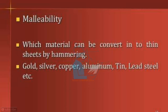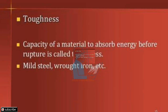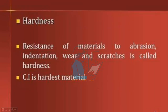Malleability is the process which converts a piece of aluminum into a thin sheet. For example, gold, silver, copper, aluminum, lead, and steel are malleable materials. Toughness is the capacity of a material to absorb energy before rupture. Mild steel and wrought iron are some examples of tough materials.